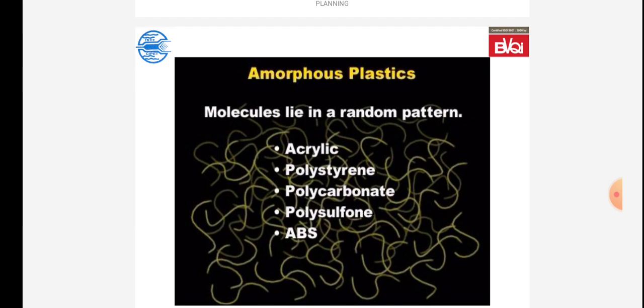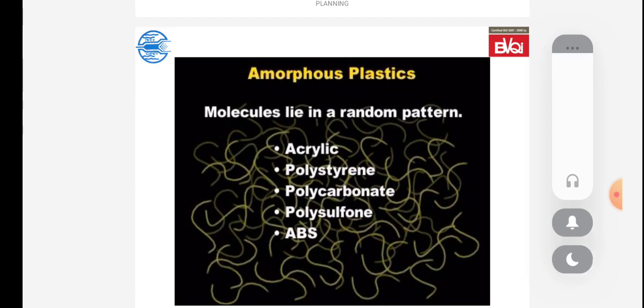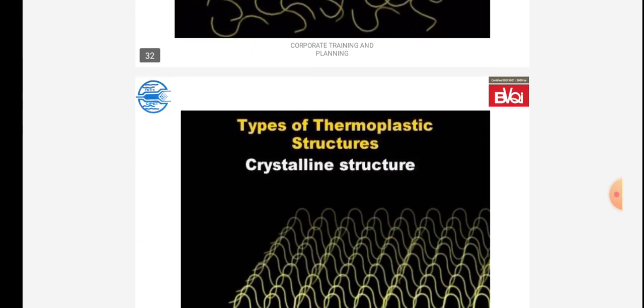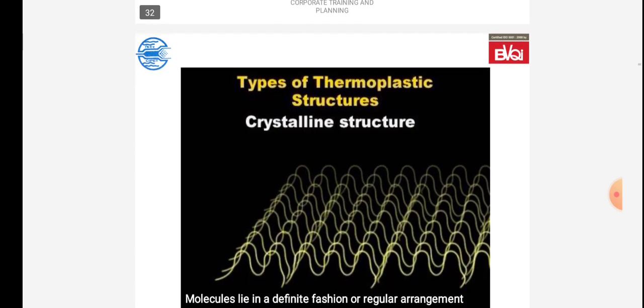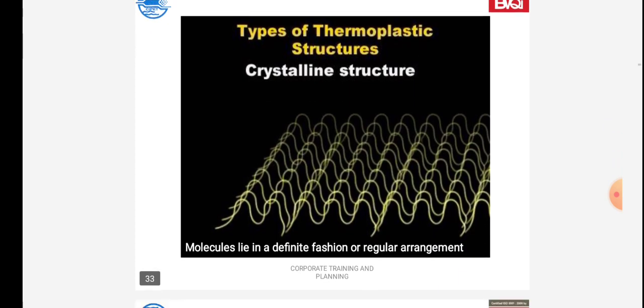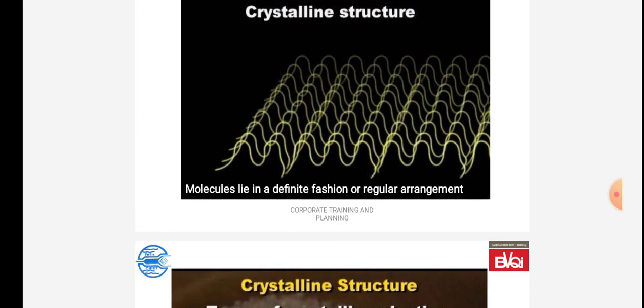Amorphous plastics have molecules that lie in a random pattern. Examples include acrylic, polystyrene, polycarbonate, and polysulfone. Types of thermoplastic structures: crystalline structure is given in the diagram, where molecules lie in a definite fashion or regular arrangement.